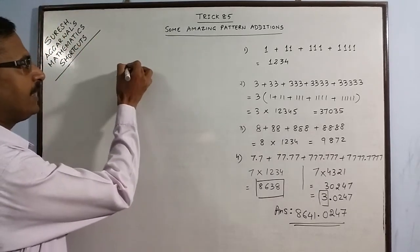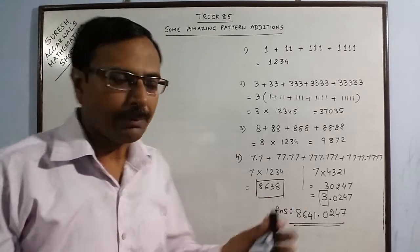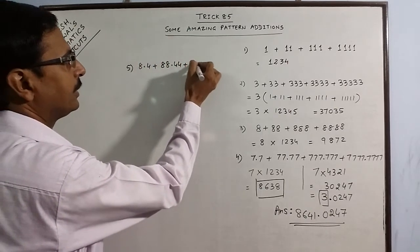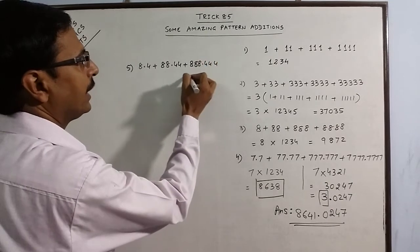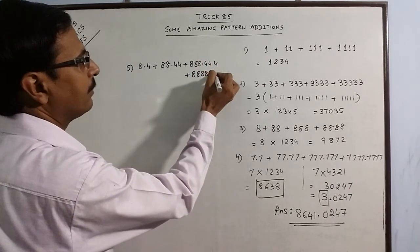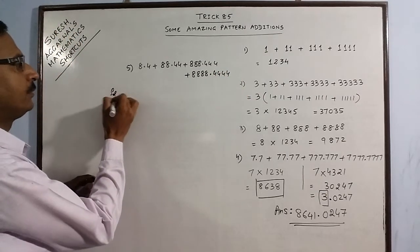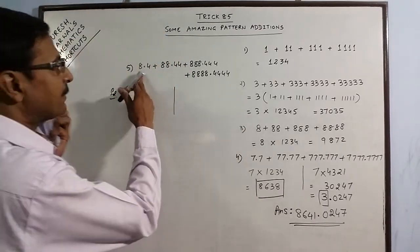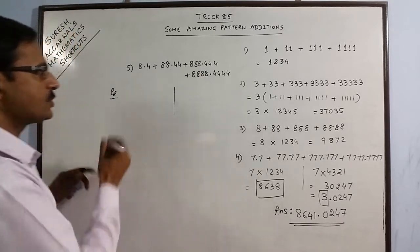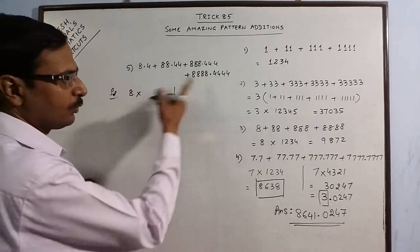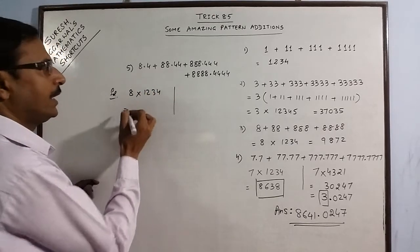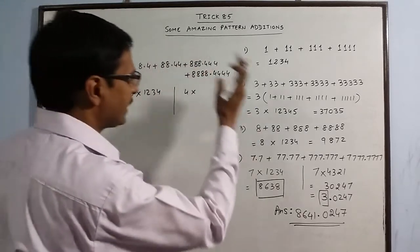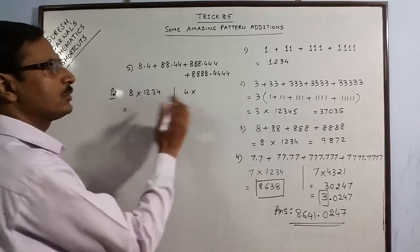Let us conclude with one more example, this time more complex — a mixture of two different digits. We have 8.4 + 88.44 + 888.444 + 8888.4444. Before the decimal we have eights — 8, 88, 888, 8888 — so the product will be 8 multiplied by 1234. After the decimal we have fours, and since it is on the right side we reverse the order: 1234 becomes 4321.